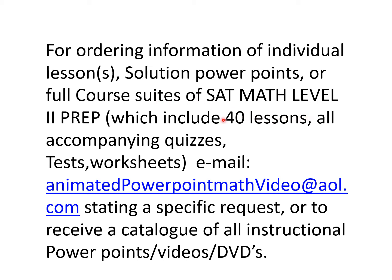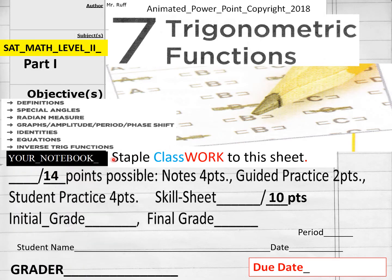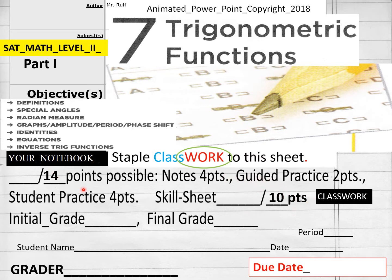Hello everybody, we're getting ready to do Chapter 7 Classwork Lesson Part 1, SAT Math Level 2 Prep. 14 points on your notebook guide, Chapter 7 Trig Functions Part 1, and then 10 points on your classwork sheet, so mostly taking notes. Name, date, period, and my class, due date, onliners, homeschool.